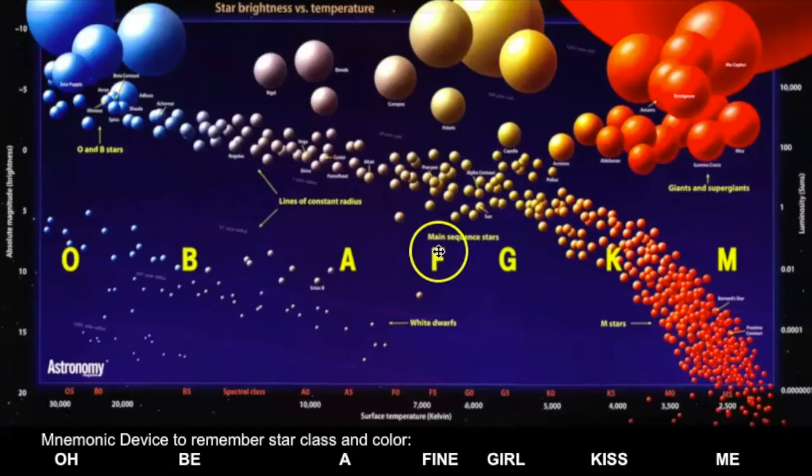And these letters that are across here stand for spectral class. And there's a mnemonic I've learned throughout my years in this to remember it, which is, O, be a fine girl, kiss me. I have that right down here. So, that's a way I remember spectral class. So, the HR diagram is a really great tool that we can use to help us predict temperature, color, as well as brightness, and estimate its size.